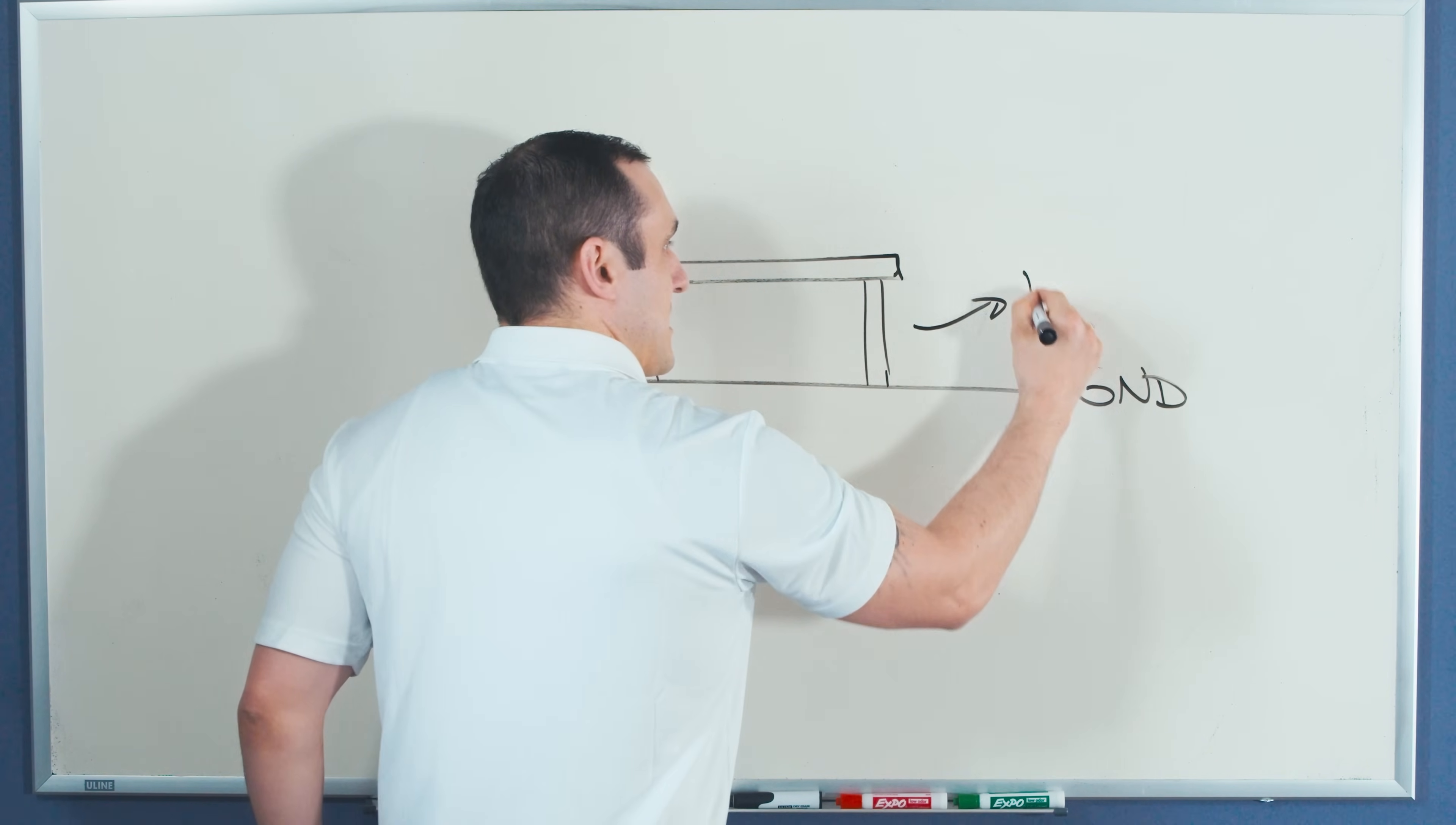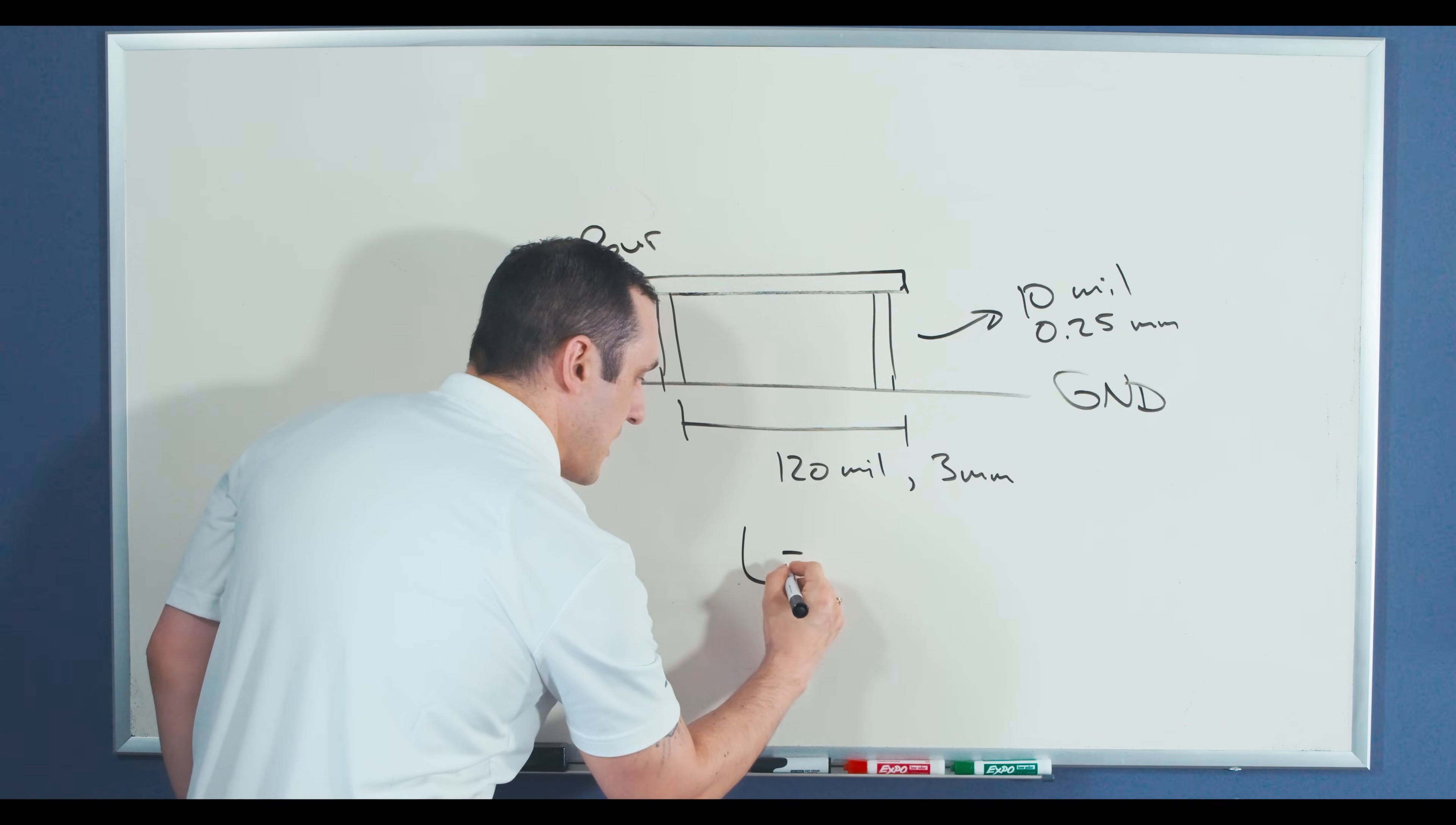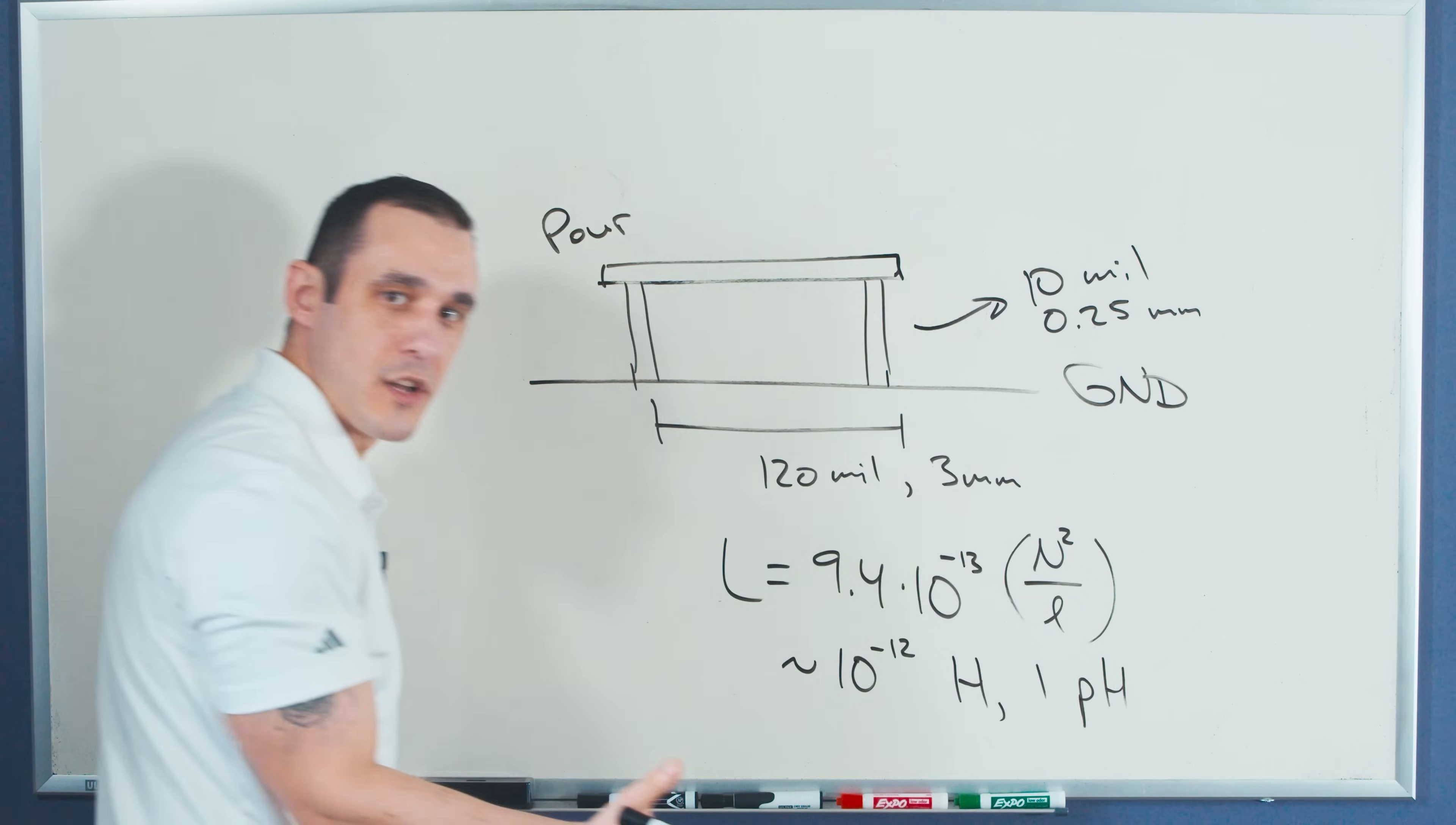Now what are some of the dimensions involved here? Well, just as an example, let's say this is 10 mil or about 0.25 millimeter. And then typical spacing between your vias might be, for example, 120 mil or about three millimeters. Now let's suppose that we calculate the inductance of this loop associated with these vias. So if you just take these dimensions, you take the relative permittivity of the dielectric substrate, you get L is equal to 9.4 times 10 to the negative 13th, multiplied by this inductance factor, n squared, divided by whatever the depth of this window is. So this inductance factor could vary pretty greatly, but I think the message here is that the order of magnitude of inductance that you would expect here is basically 10 to the negative 12 henrys or one picohenry. Pretty small inductances here.